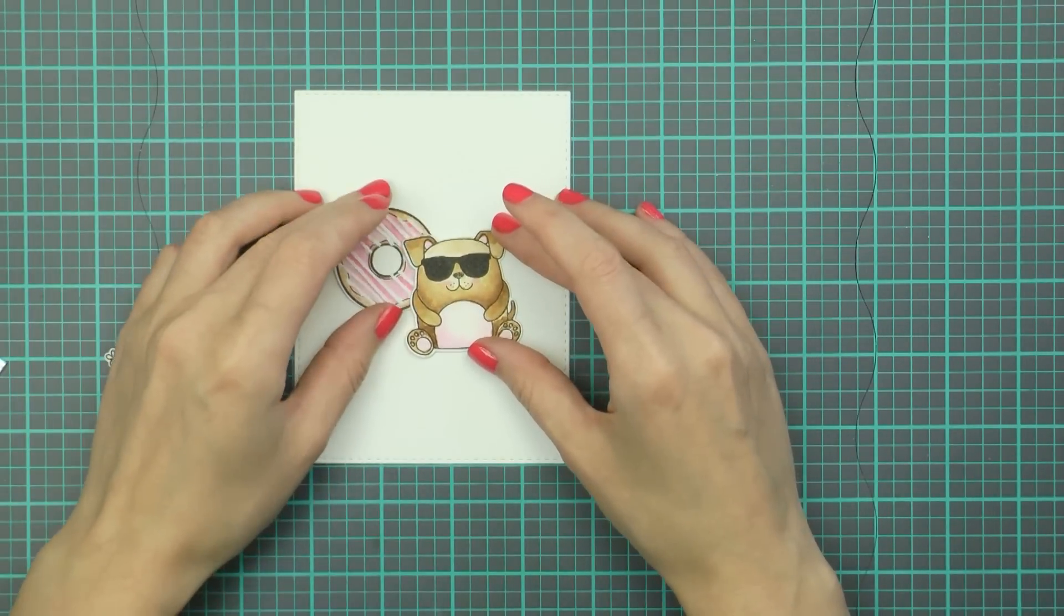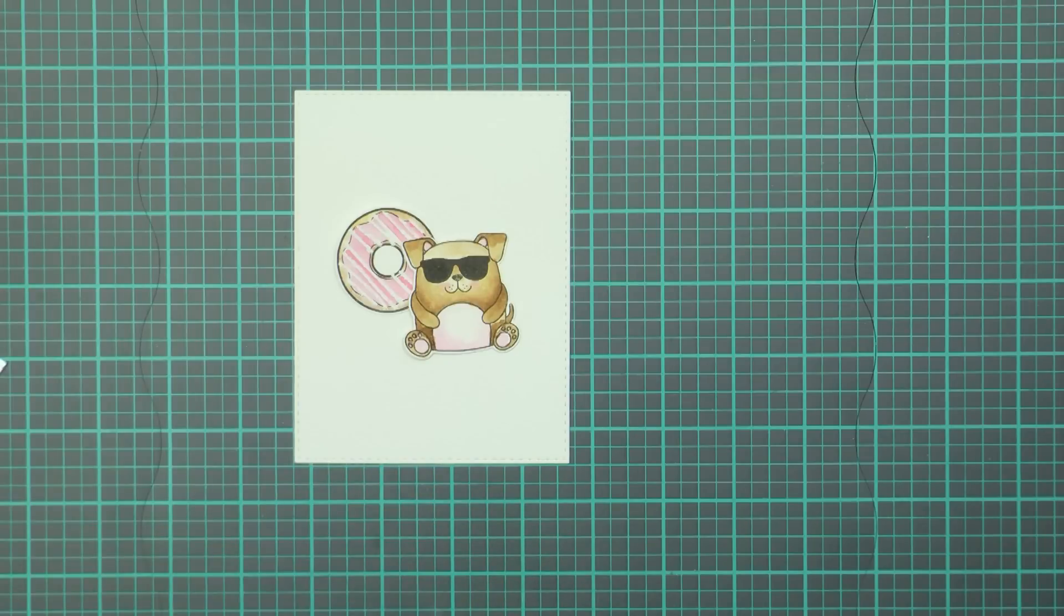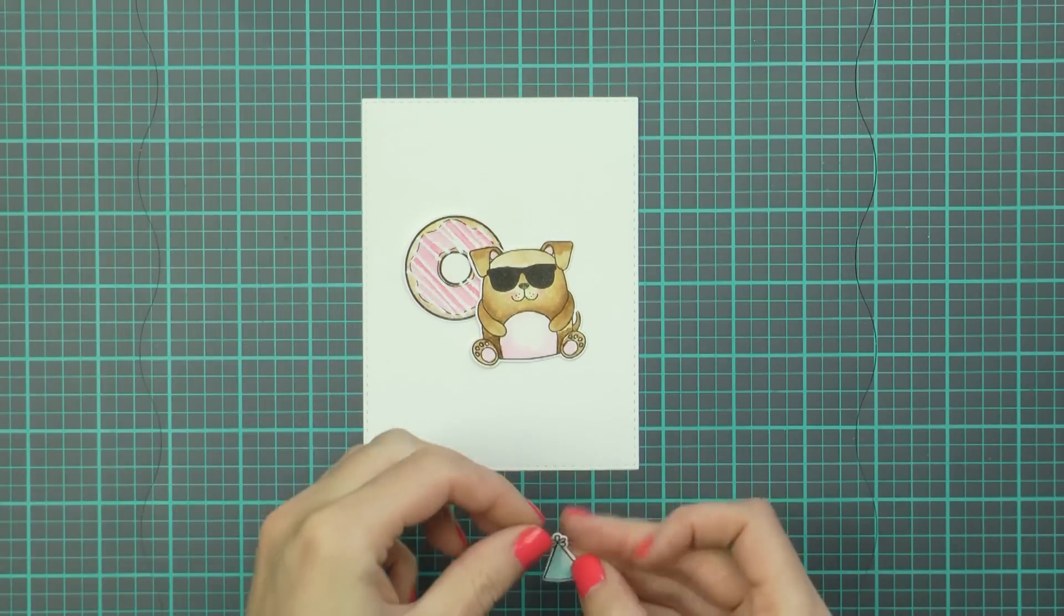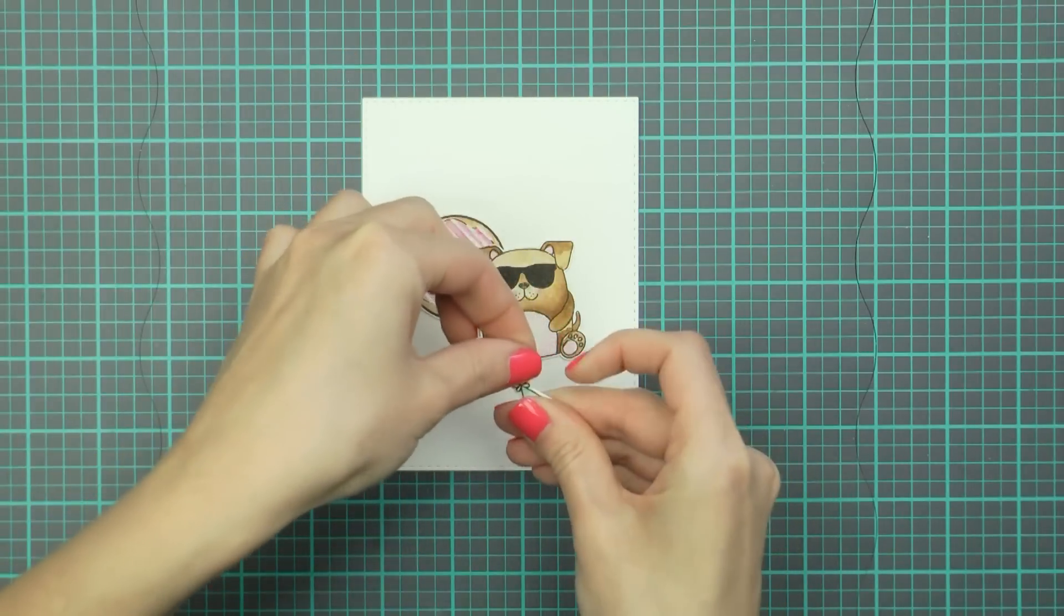Now I also die cut a panel using Simon's stitched rectangle die and I cut it out of watercolor paper. I used watercolor paper here because I wanted the texture of the paper in the background to match the texture of the paper on the watercolor images.